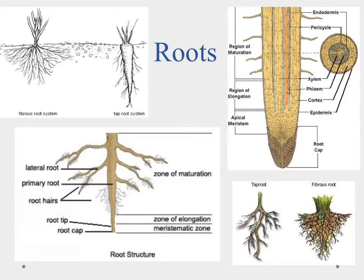We'll start our discussion on plant structures with roots. Roots provide an important part for the plant: they anchor it into the ground, they get water up from the soil, they also get nutrients from the soil, and then use the vascular tissues to transport those materials to the other parts of the plant.